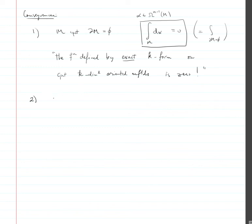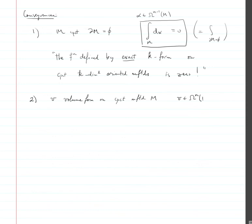Now here's an important corollary. If we have a volume form on a compact manifold m — meaning an n-form that is top degree and nowhere vanishing — then it has an equivalence class which determines an orientation.